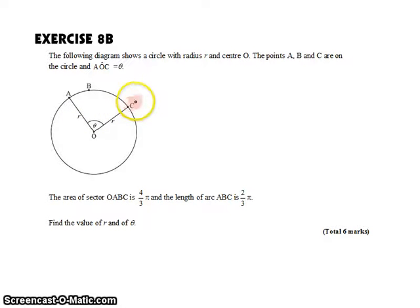Angle A, O, C is an unknown angle, theta. We do know the area of the sector O, A, B, C. So that's this section in here. And we're told that that area is 4 thirds of pi.